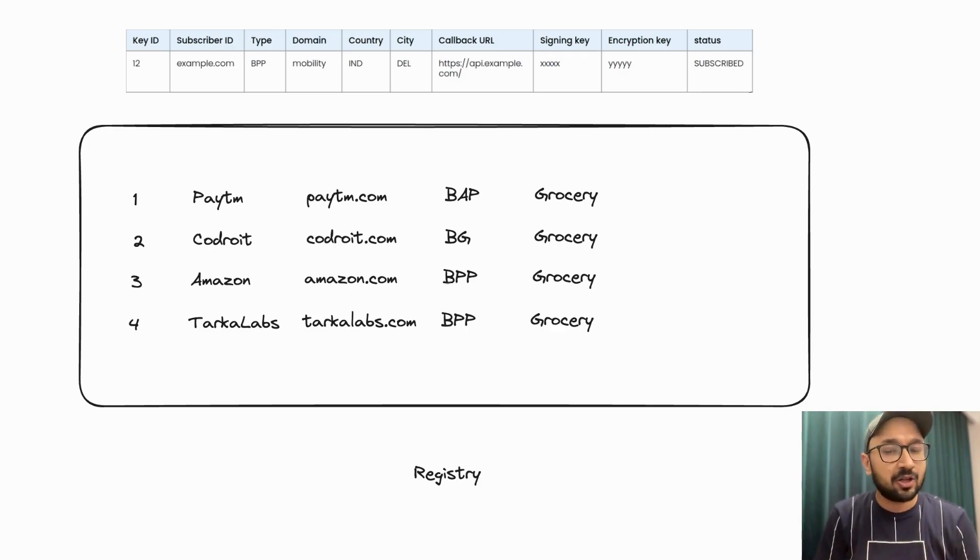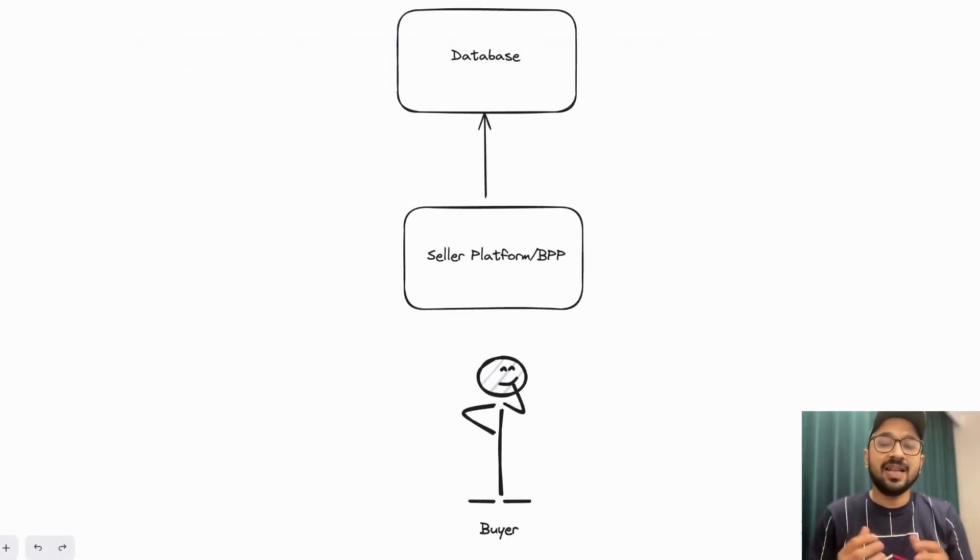In the example on the screen, Paytm, Tarka Labs, and Amazon have registered as BAP, BPP, and Gateway with the Beckon registry, and registry keeps a track of all participants in a table-like structure. Let's move on.